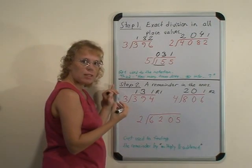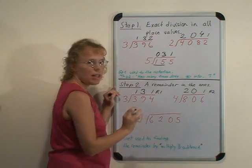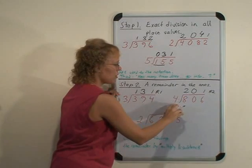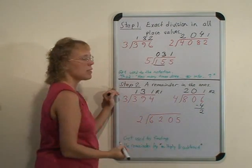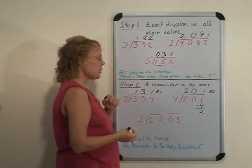But now we will practice the multiply and subtract step for finding the remainder. So we go: 1 times 4 is 4, and then subtract 2, and that gives us the remainder in the ones.